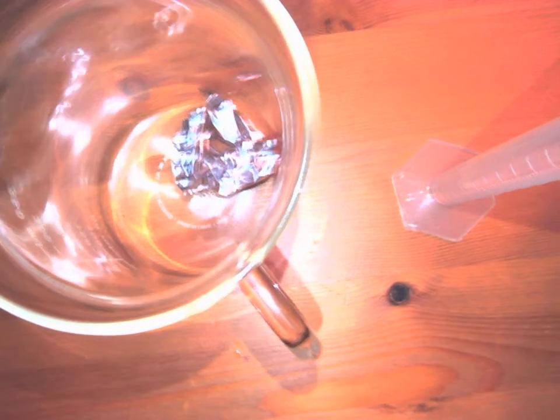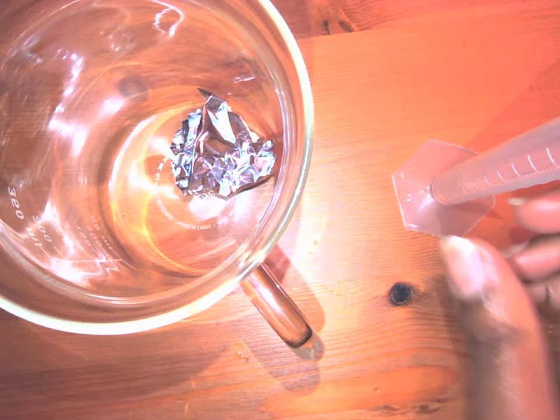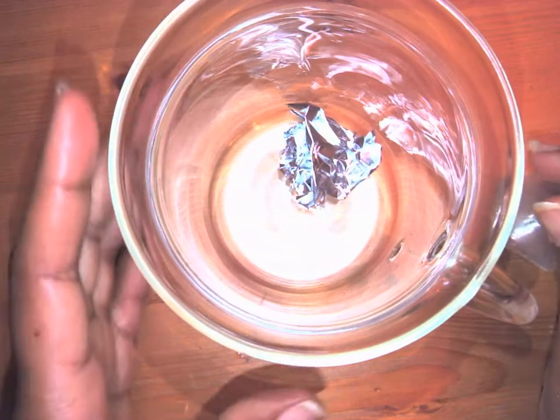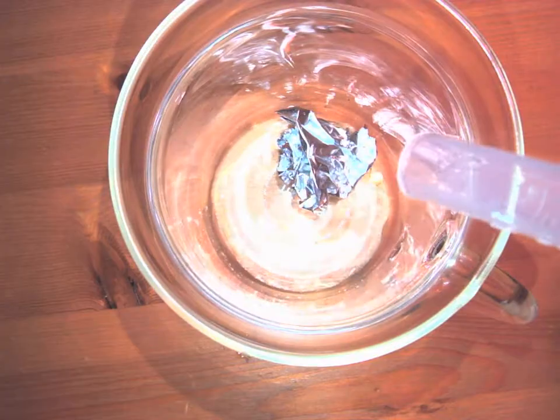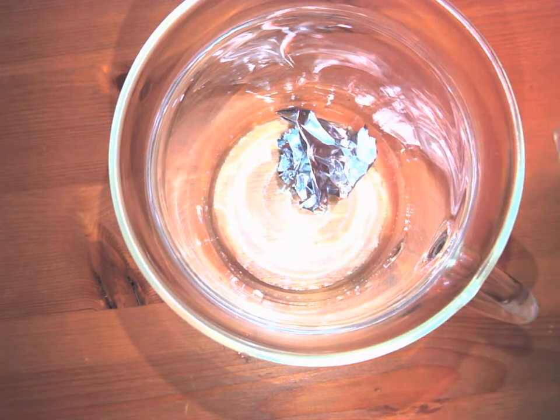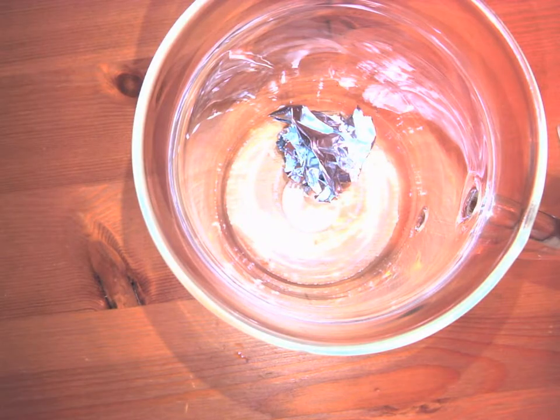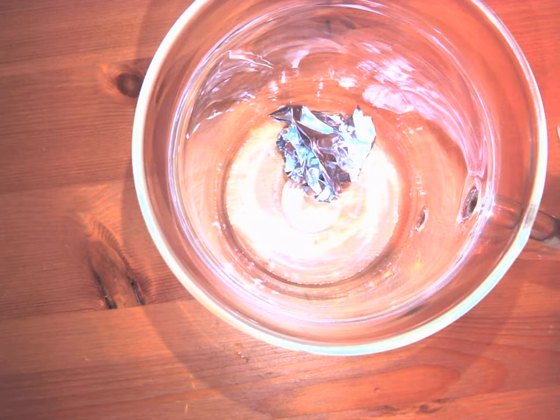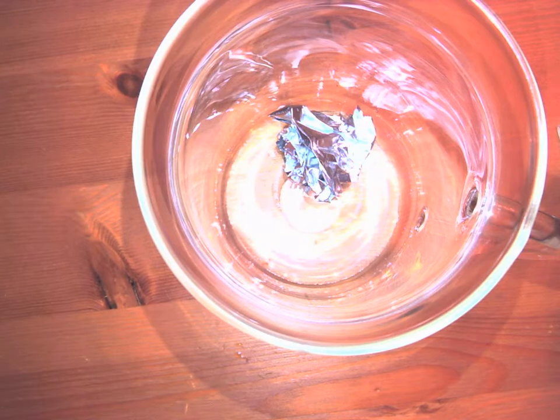That's about the same amount used in the HCl or hydrochloric acid and aluminum foil video. What we're going to do is add the vinegar into the beaker with the aluminum foil and wait a minute or so to see if there's a reaction.